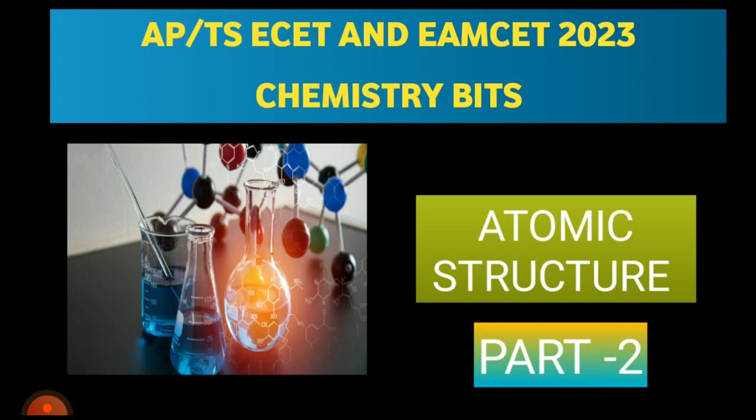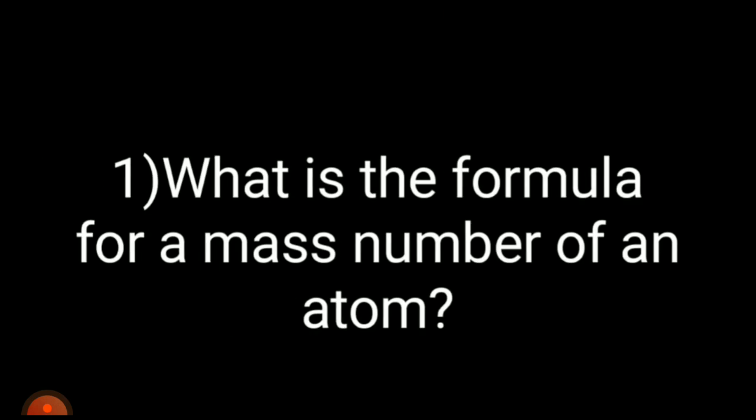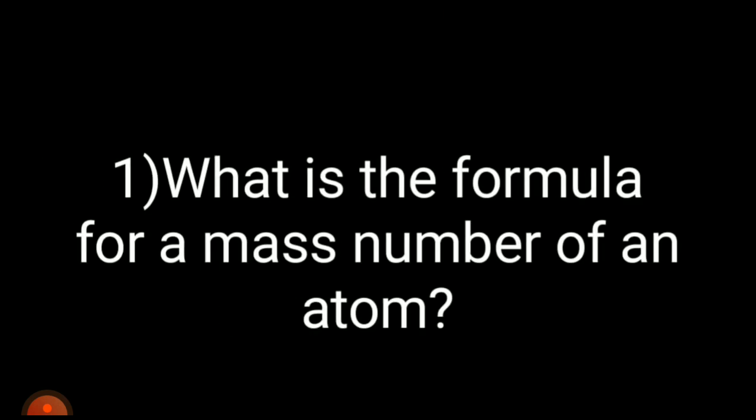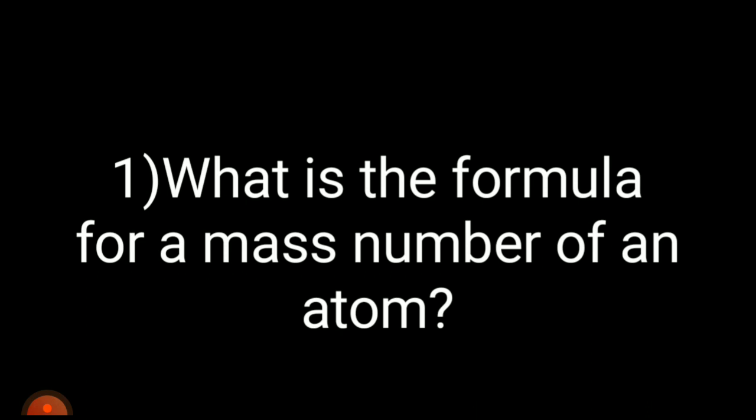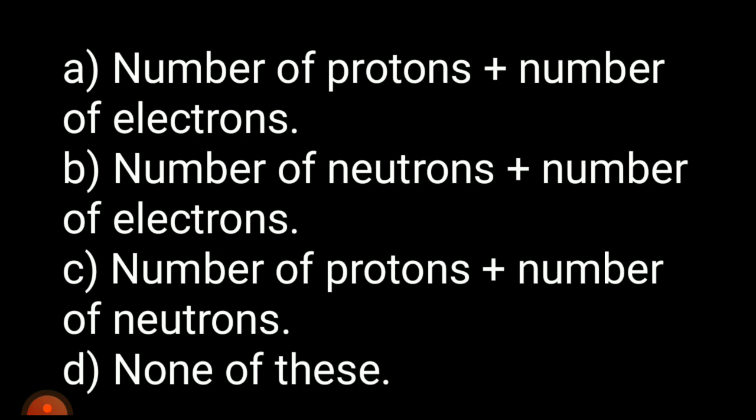So the first question is: what is the formula for a mass number of an atom? Options are: A) number of protons plus number of electrons; B) number of neutrons plus number of electrons; C) number of protons plus number of neutrons; D) none of these. Your time starts now.